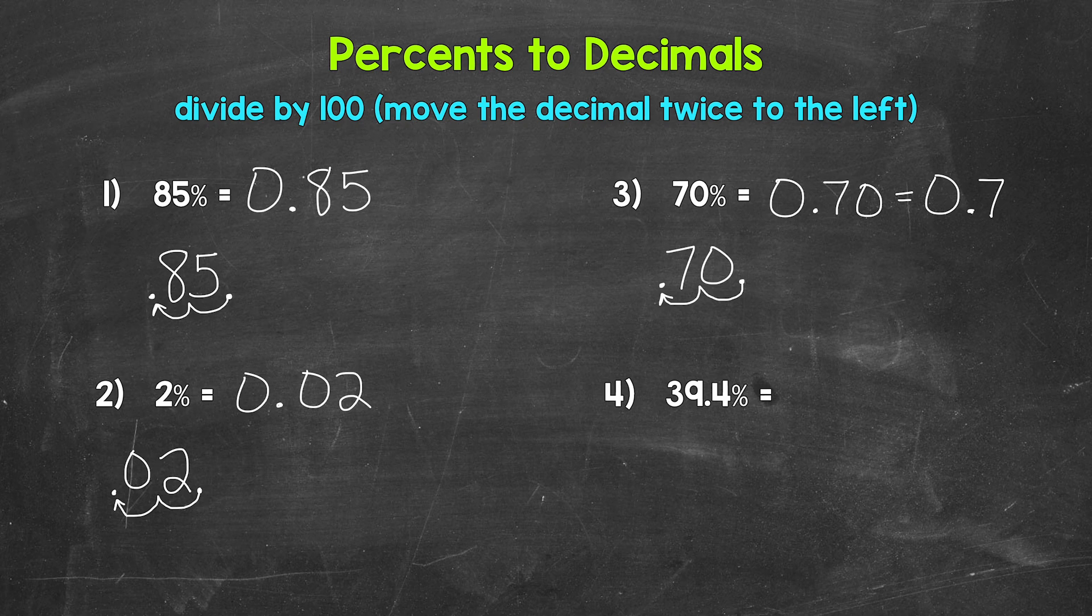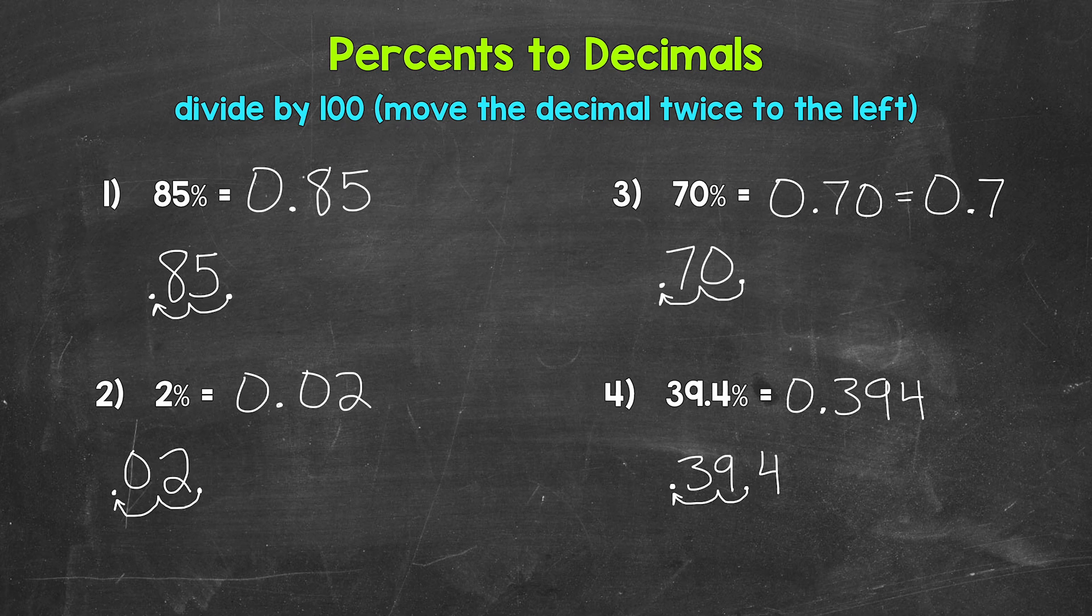Lastly, let's move on to number four, where we have 39.4%. So let's divide this by 100 in order to convert it to a decimal. So let's move the decimal once, twice, to the left, and we end up with 0.394. So 39.4% equals 0.394, so 394 thousandths. So there you have it.